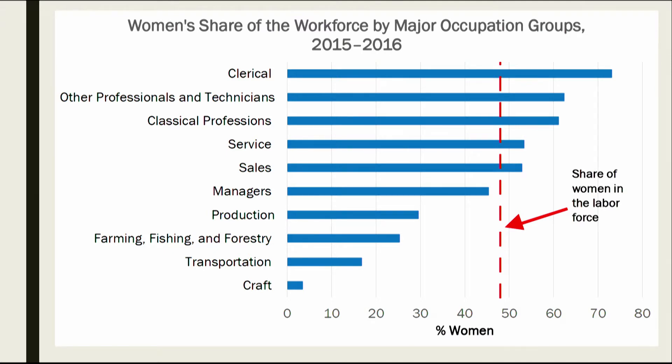When we study occupational segregation, one way to quantify its extent is by using the index of dissimilarity, which basically expresses the percentage of men or women that would have to switch occupations in order for complete gender integration to be achieved. In 2016, 49% of all women or men would have to switch to a non-gender-typed occupation for full integration to be achieved.